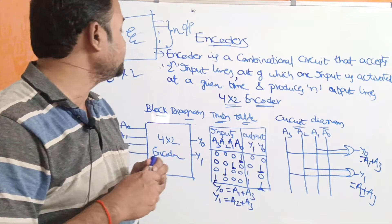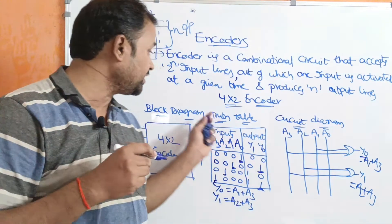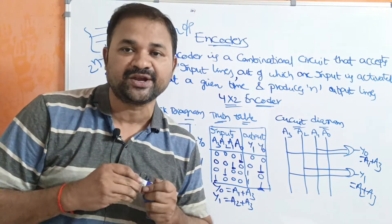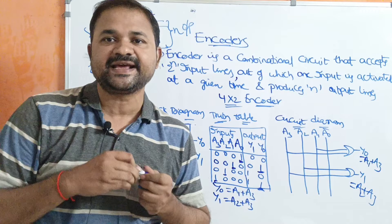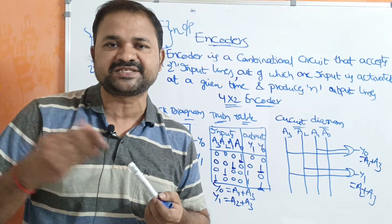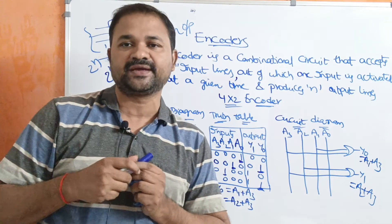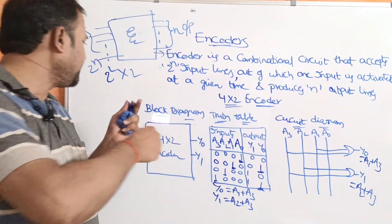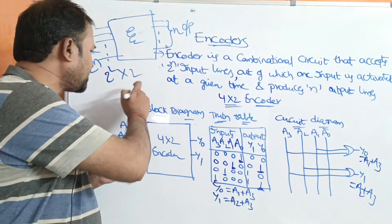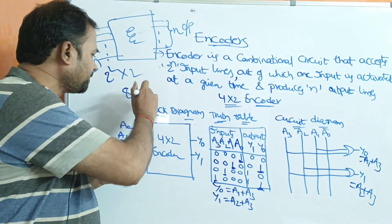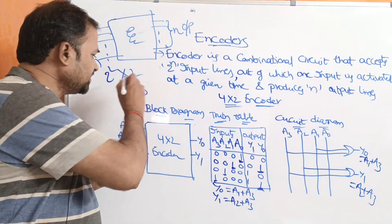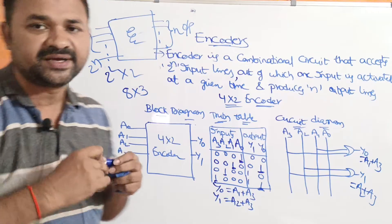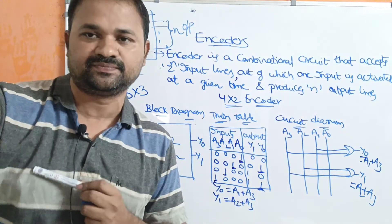This concludes the introduction to encoder as well as the 4 by 2 encoder. In the next video, we will discuss about the 8 by 3 encoder, which has three output lines.